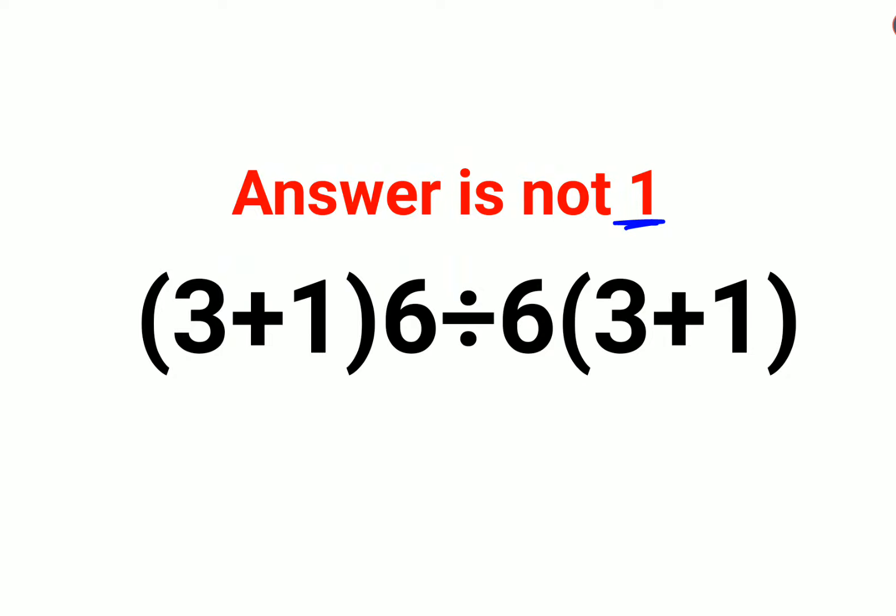The reason being they thought that this bracket and 6 then divide by 6. So 6 divided by 6 is what? 1. And then you have 3 plus 1 divided by 3 plus 1.